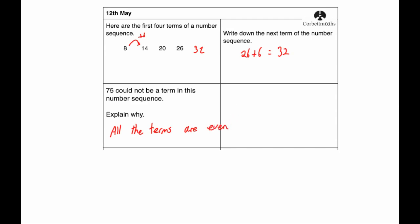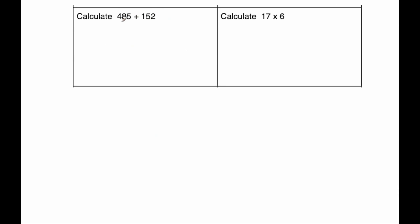Our next question we've been asked to do an addition. We've got 485, add 152. So lining them up in columns. 5 plus 2 is 7. 8 plus 5 is 13. So put the 3 down, carry the 1. And 4 plus 1 plus 1 is 6. So the answer would be 637.